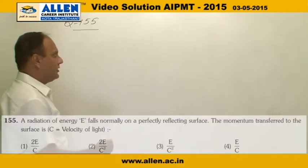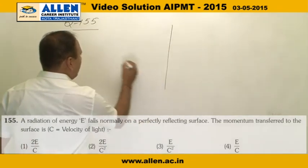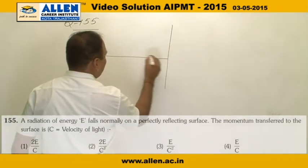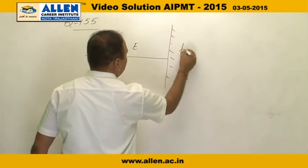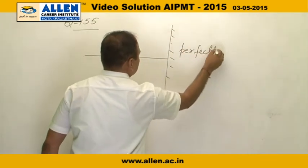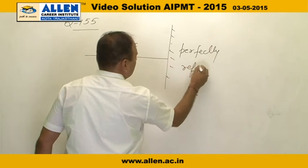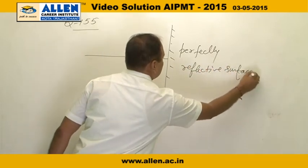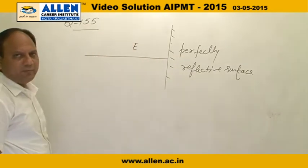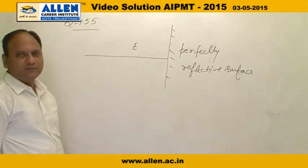In question number 155, it is given that a light radiation of energy E incident normally over a perfectly reflective surface. And there is requirement of momentum transferred to the metal.